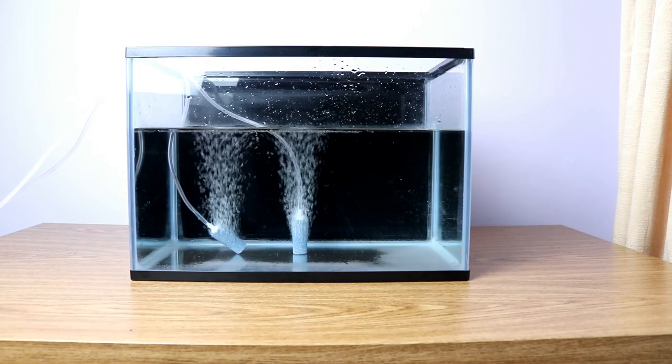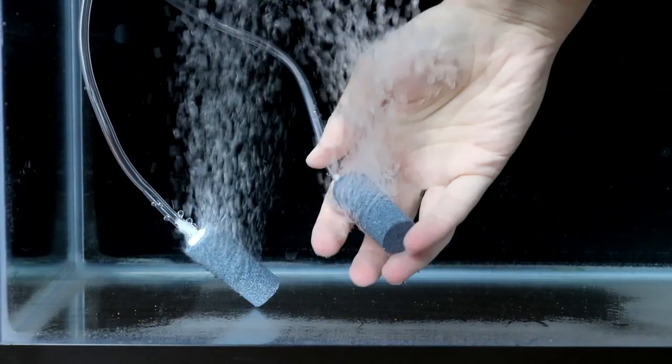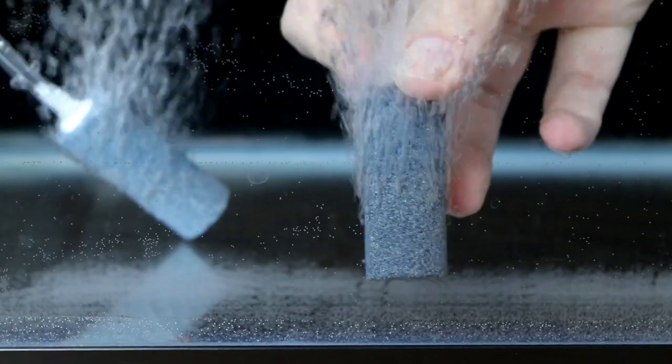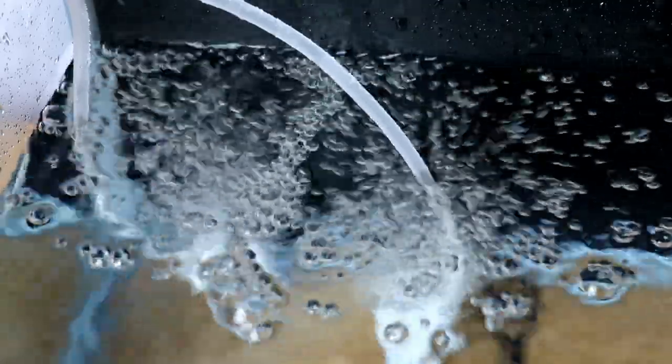As you can see it produces quite a dense stream of bubbles giving plenty of movement to the water in the tank. And this is using the full 2 meters of airline that it came with, and the pump itself is about a meter below it sitting on the floor at the moment. And as you can see it's doing a great job. It's a surprisingly powerful little pump considering how small it is.